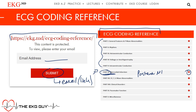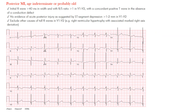Posterior MI — age indeterminate or probably old — means it maybe happened in the last week or so, but it's not something that's going on right now that we can likely intervene on. So how do we know that's the case? There are a few things you have to note.